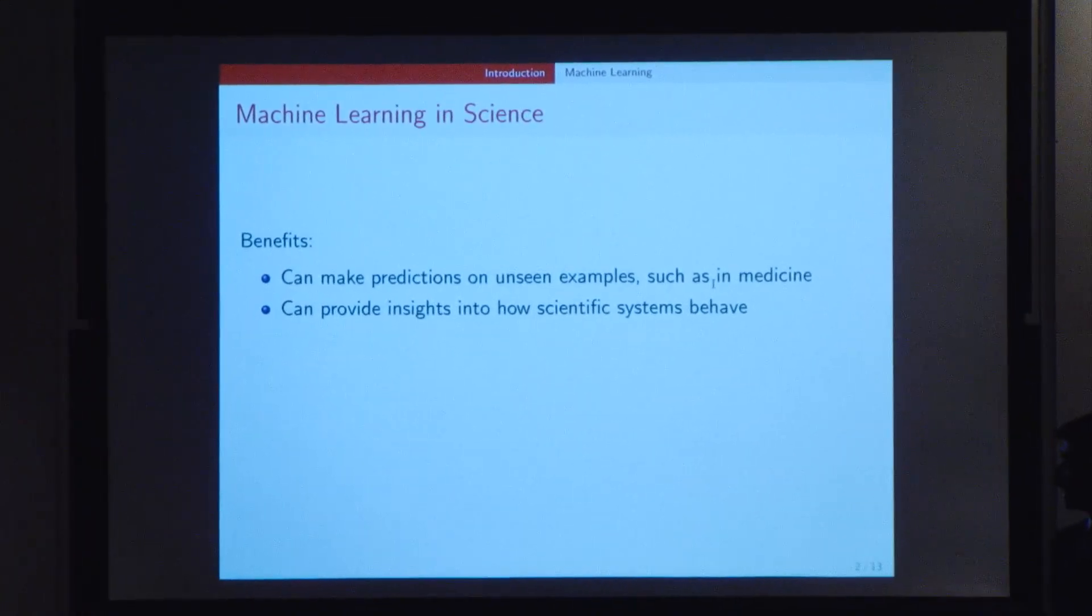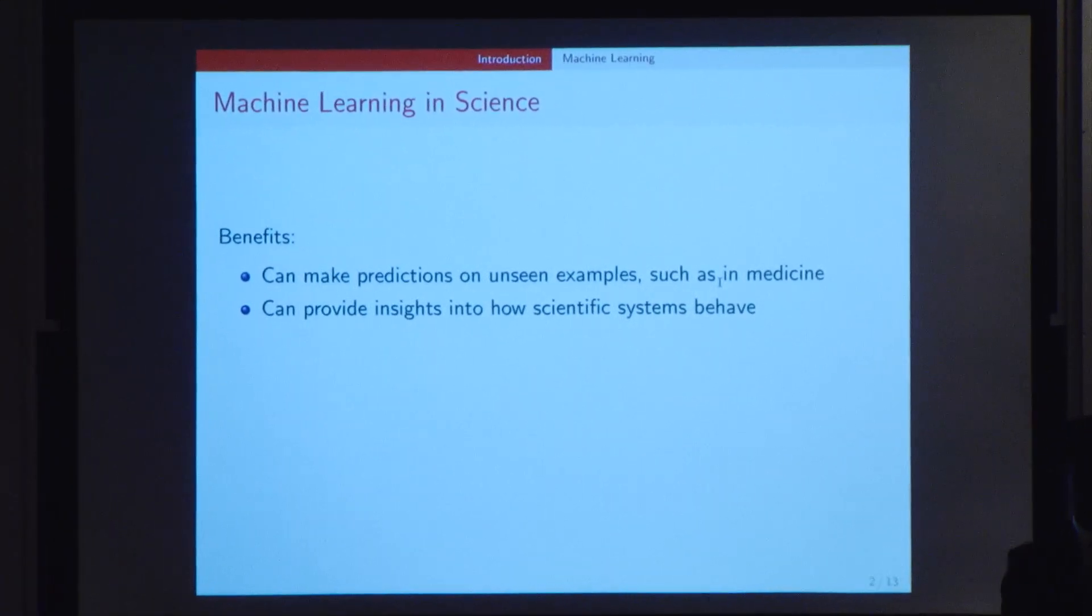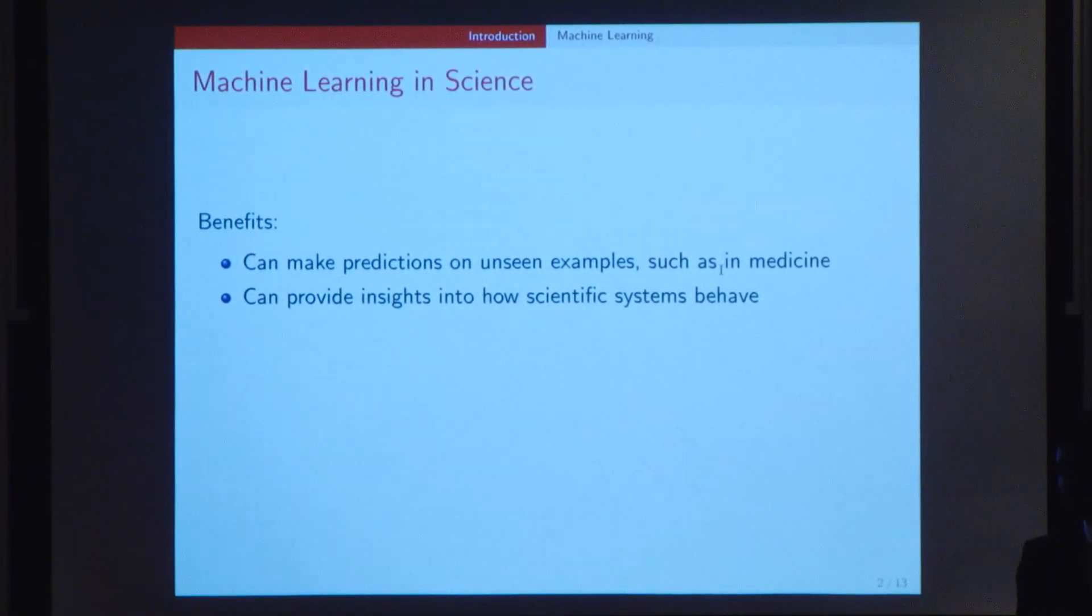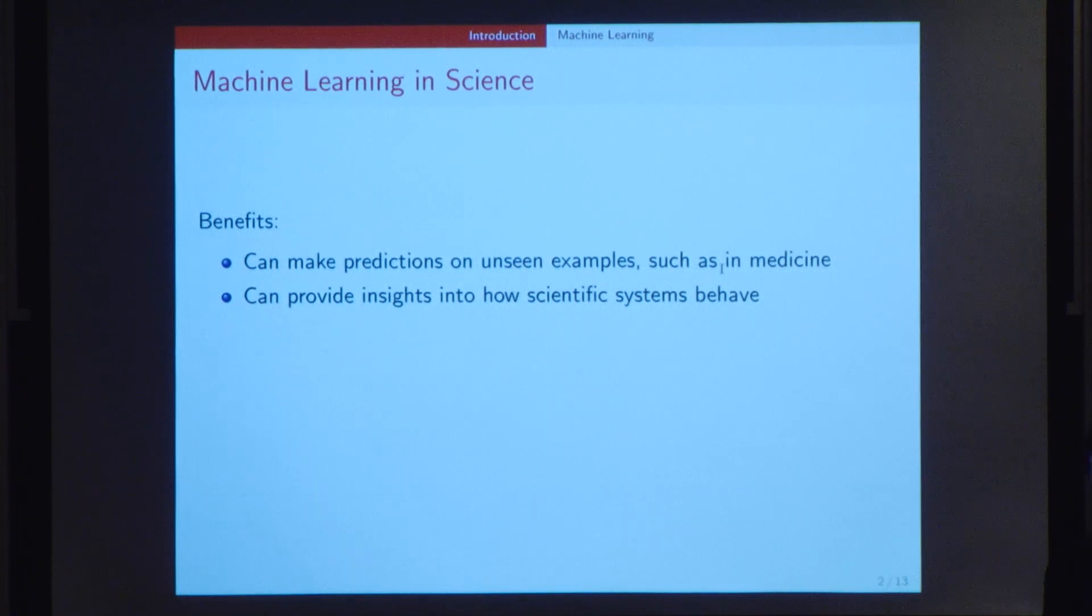Another use of machine learning happens to be in science, but using machine learning for scientific research can have both benefits and limitations. The first benefit is that it can make predictions on unseen examples based on previously learned data, such as in medicine. Another benefit is that it can provide insights into how scientific systems behave and can perhaps be even used to derive the very equations that govern these scientific systems.